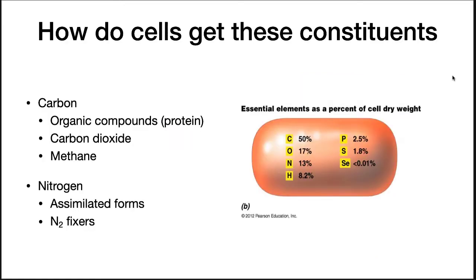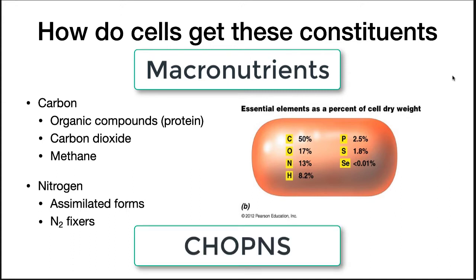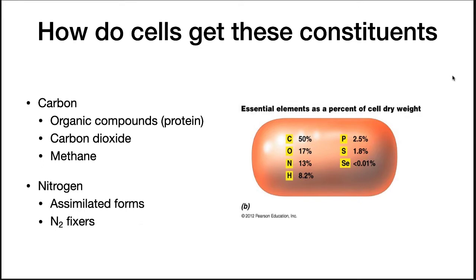The amount of any element that a cell requires depends upon the element. Carbon makes up 50% of the cell's dry weight. Oxygen is 17%, nitrogen is 13%, hydrogen is 8.2%, and so on. These elements needed at high concentrations are called macronutrients. An easy way to remember this is the acronym CHOPNS. For carbon, an organism will get it from organic compounds, carbon dioxide, or methane.